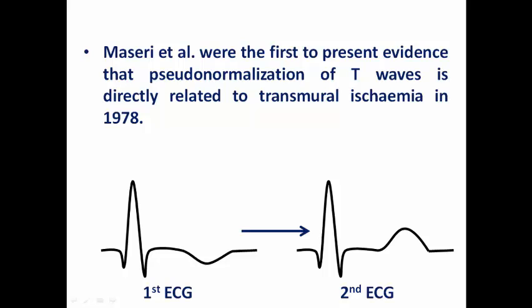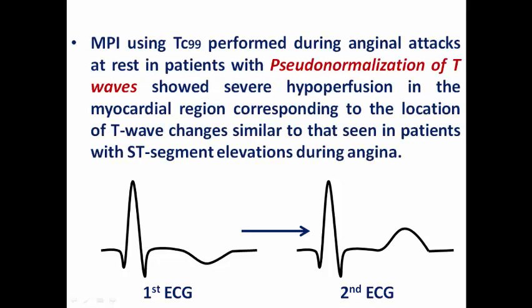Maseri et al. was the first to show evidence that pseudonormalization of T wave is related to transient ischemia in 1978. He showed evidence that the patient had pre-existing T wave inversion as a chronic ischemia and when he developed anginal symptoms, he had positive T waves. This is related to acute myocardial ischemia. When MPI using technetium was performed during the angina attack at rest in these patients, it showed evidence of severe hypoperfusion in the myocardial region corresponding to the location of the T wave changes, similar to that seen in patients with ST elevation during angina.